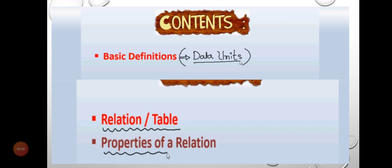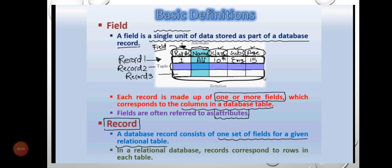Basic definition: Field. A field is a unit of data consisting of one or more characters, for example, employee number, employee name, or grade of an employee in a record. A field is a single unit of data stored as part of a database record.